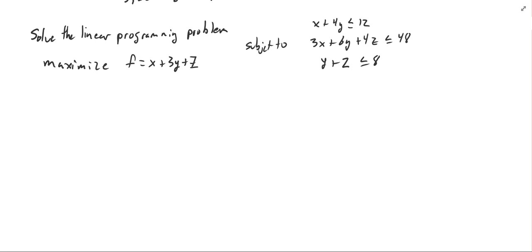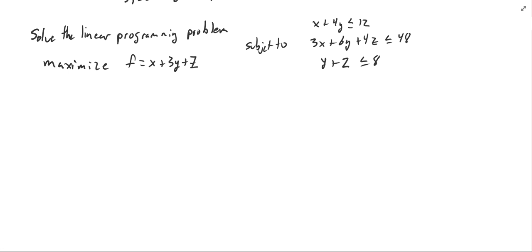Since this has three variables — x, y, and z — I have to do the simplex method on it, rather than a complicated three-dimensional graph. Let's just do the simplex method. I want to introduce slack variables into each of my equations, and create the simplex tableau.